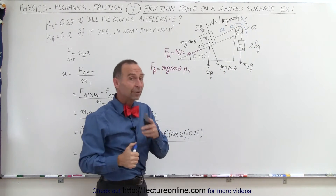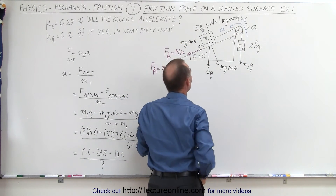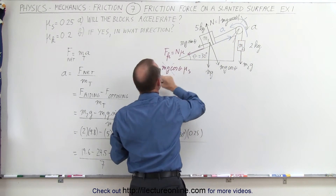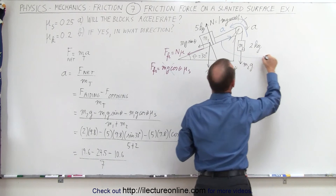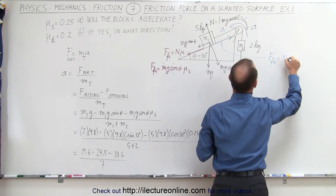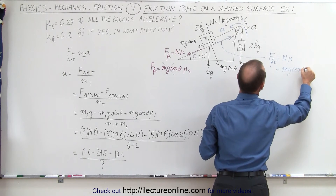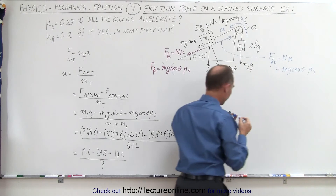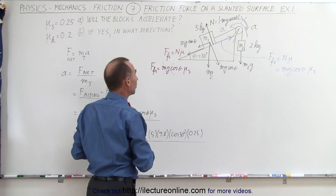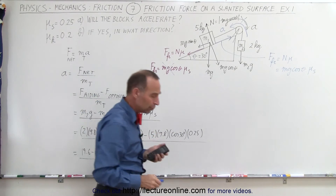If it accelerates in that direction, if both masses move in this direction, then the friction force will actually be in the opposite direction. So we get rid of the previous friction term, and we can then say that the friction force is equal to the normal force times mu, which is equal to Mg cosine of theta times mu sub s. The magnitude will be exactly the same as before, but now it will be in the opposite direction.